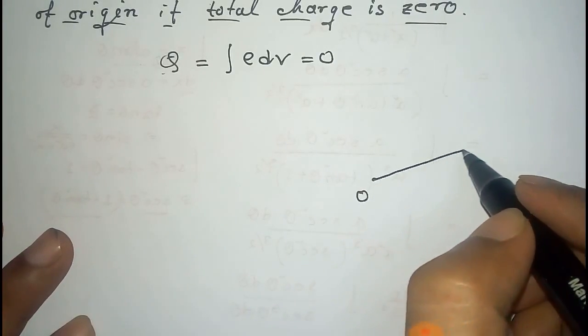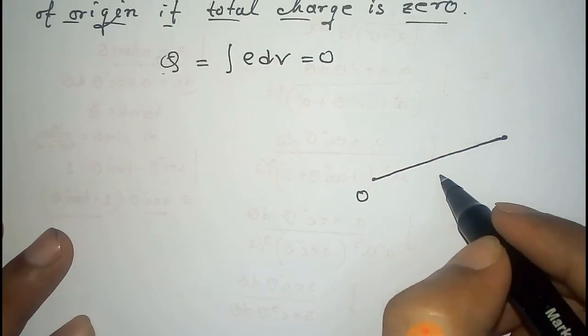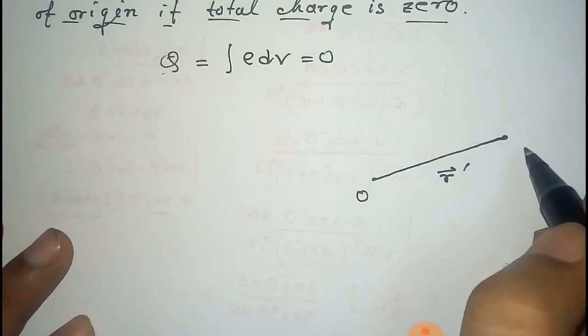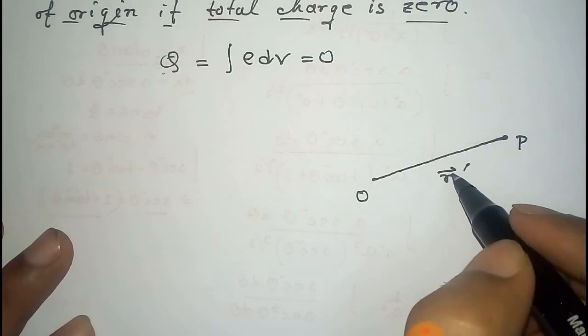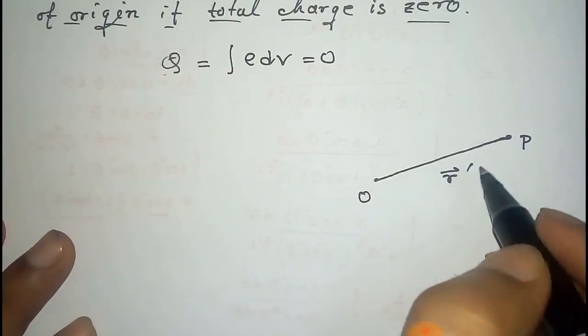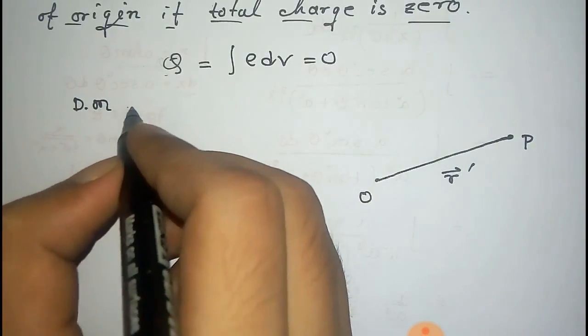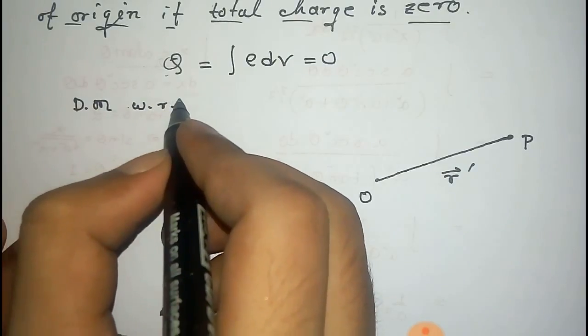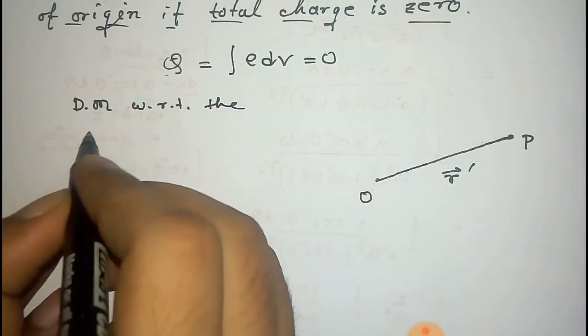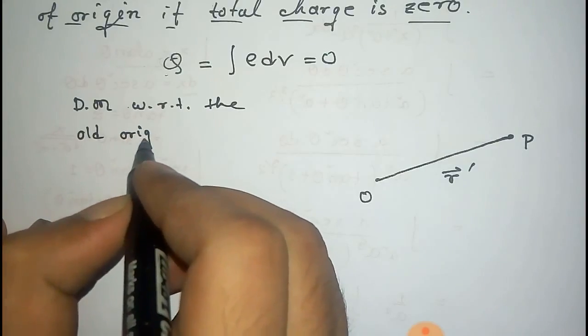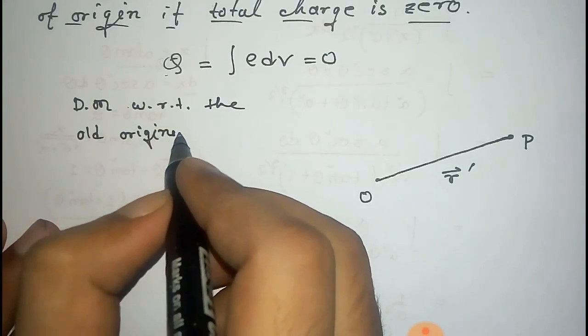For that, it will be independent of origin. So let there be an origin of the old coordinate system, and we'll find the dipole moment at a distance r vector prime at a point P.